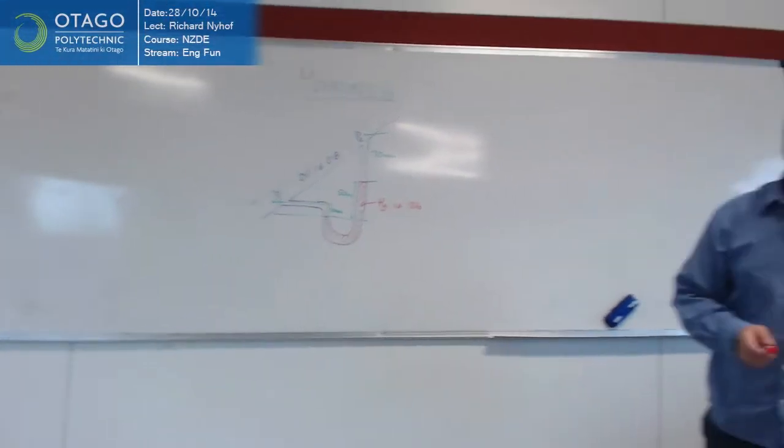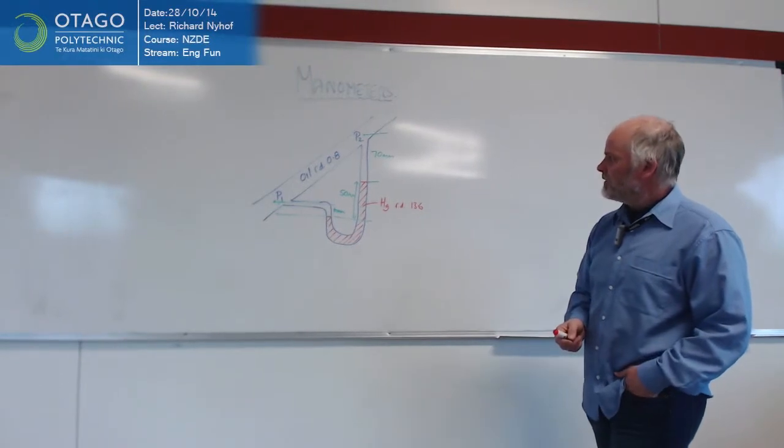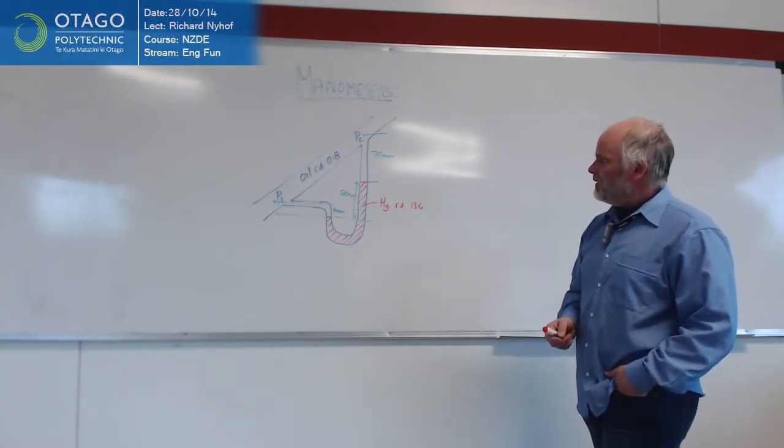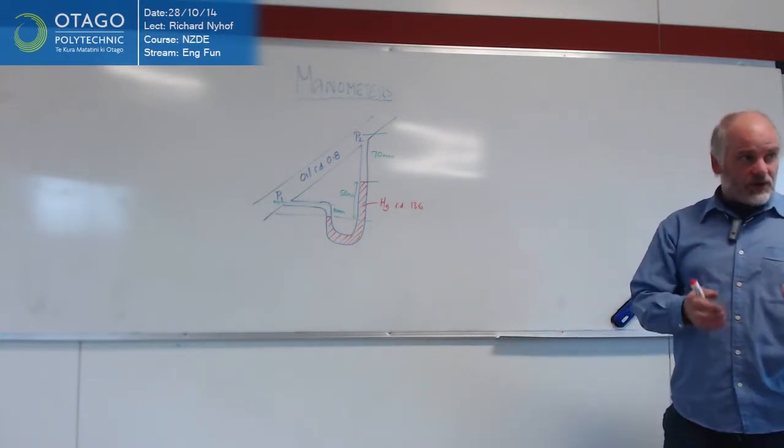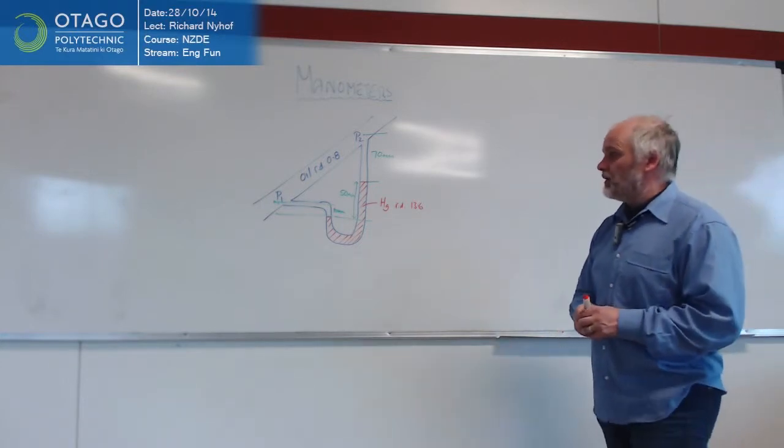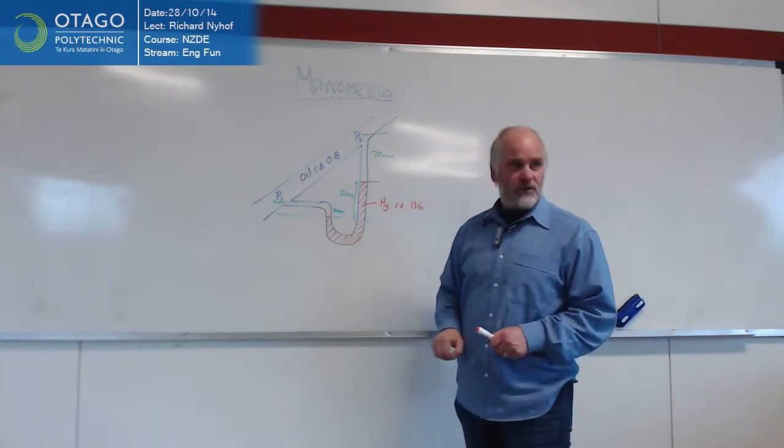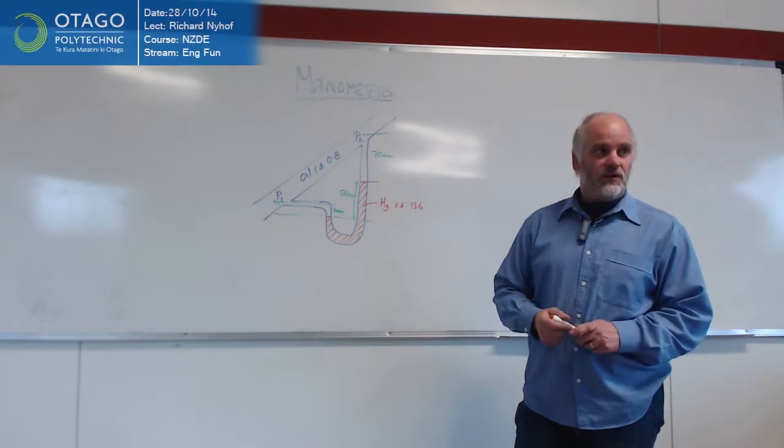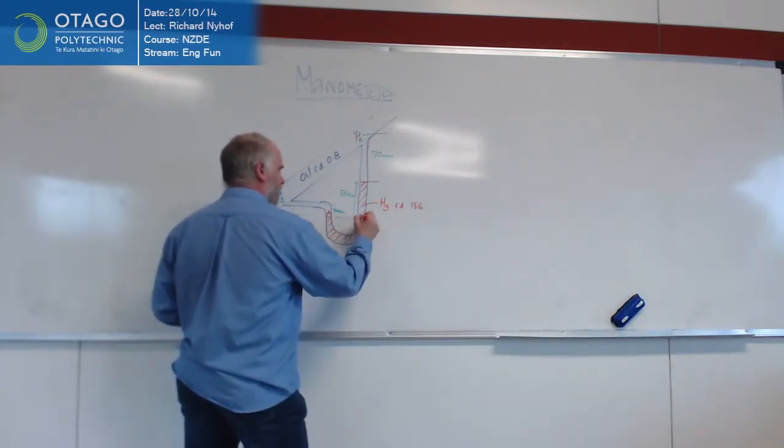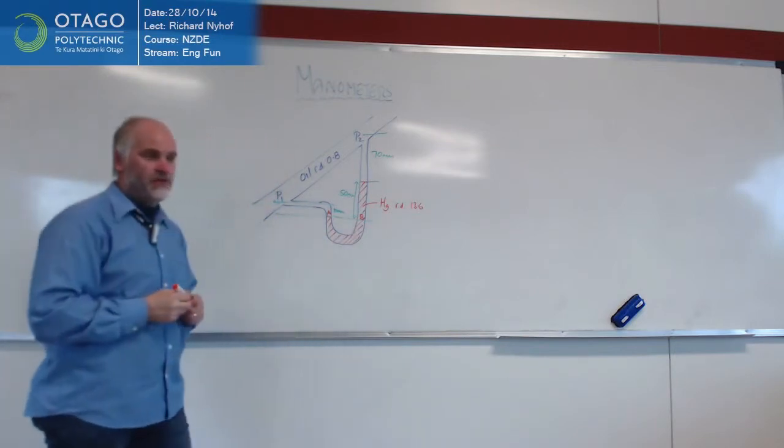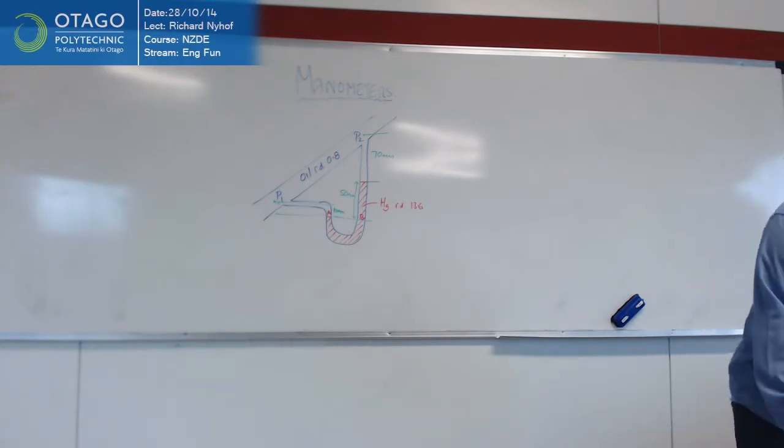So this time we're taking into account the heads of oil as well. And all we're doing is we're going to use exactly the same idea as before. We're going to say at the two points, there and there, the pressure has got to be equal. So whatever the total pressure at A is, has got to be equal to the total pressure at B, is the guts of it. And then we just work out the pressures at those two points.